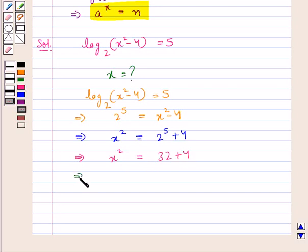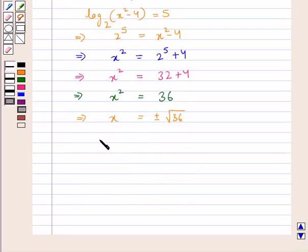Thus, we get x square is equal to 36. This means we have x equal to plus minus square root of 36 or you can say that x is equal to plus minus 6.